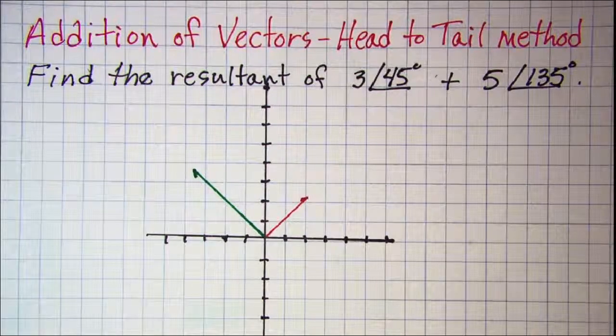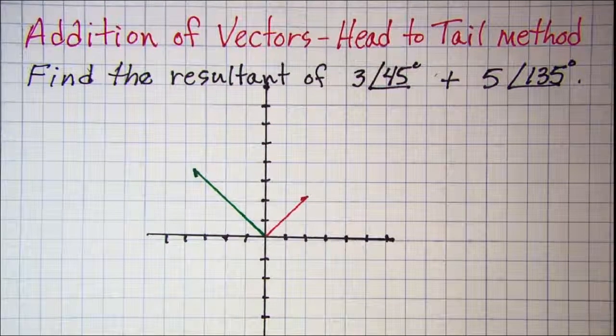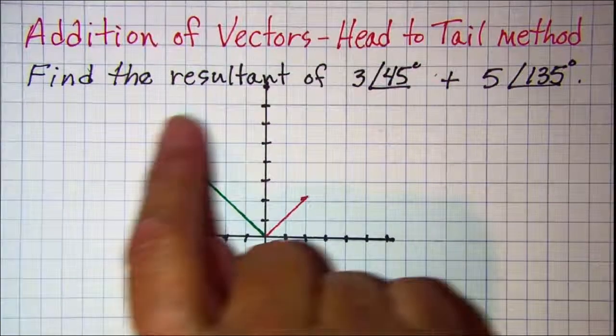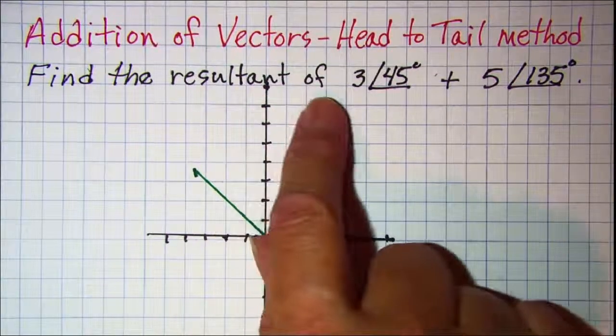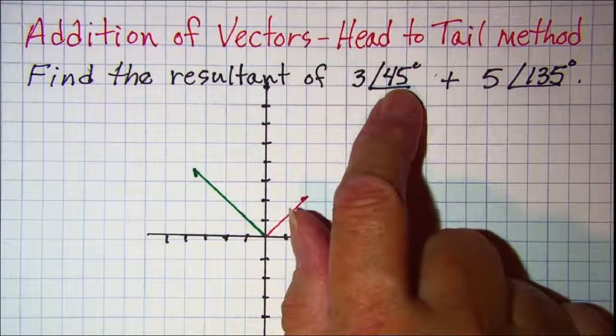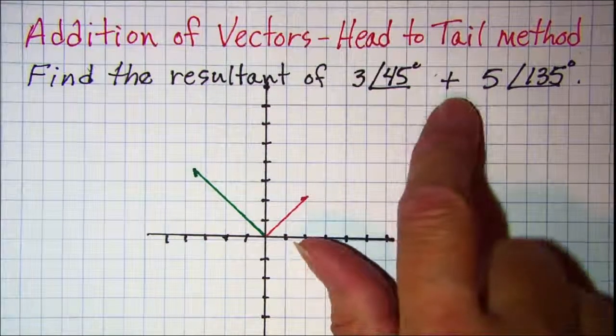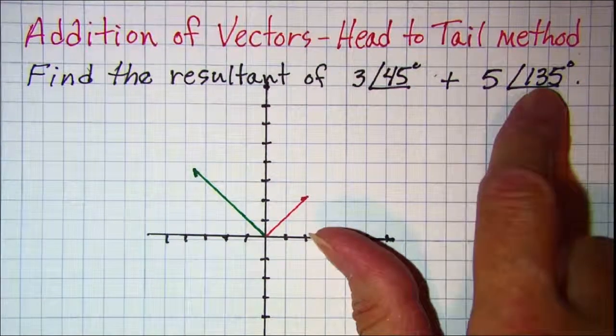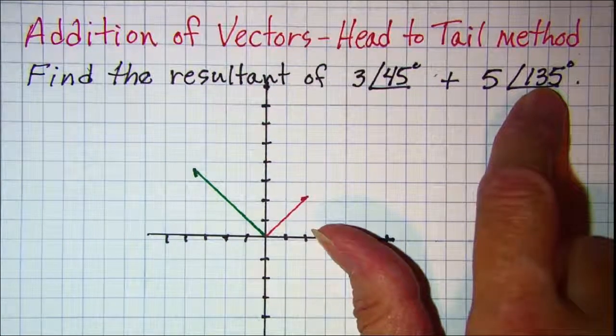In this video we'll be talking about addition of vectors using the head to tail method. The problem that we'll be working is to find the resultant of a vector with a magnitude of 3 and a direction of 45 degrees, added to a vector with a magnitude of 5 units and a direction of 135 degrees.